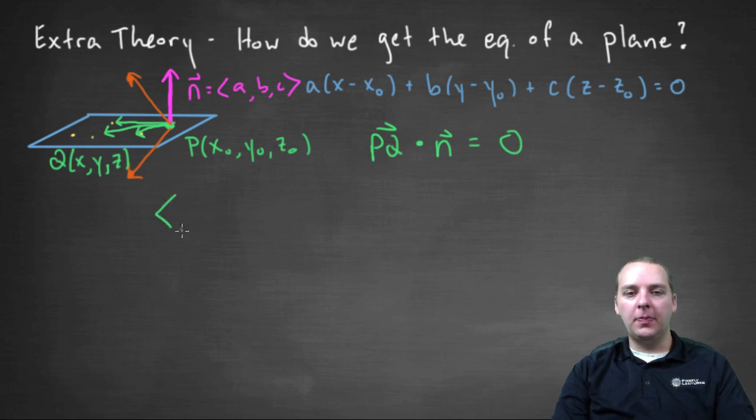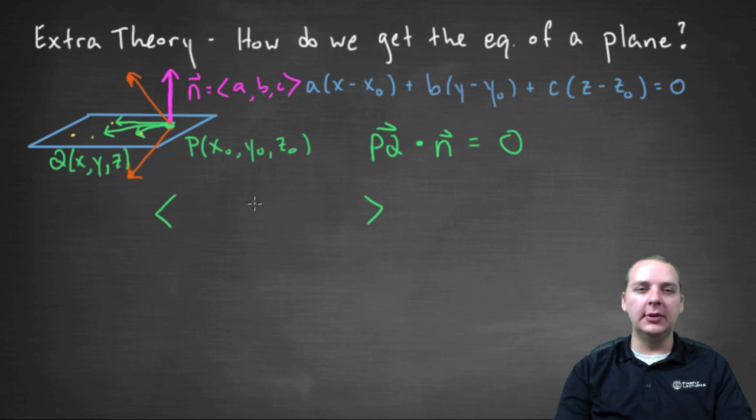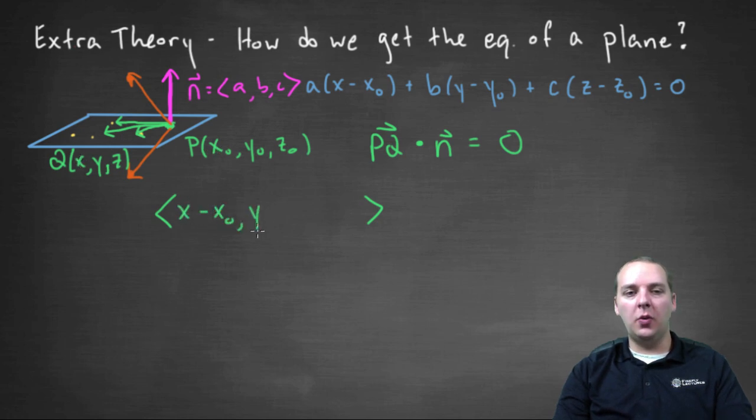So PQ, we can write that as a vector in component form. You remember how to do this from a few videos back. You would take terminal minus initial. So the ith component would be X minus X naught, comma Y minus Y naught, comma Z minus Z naught.